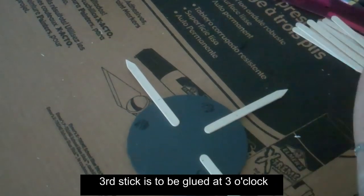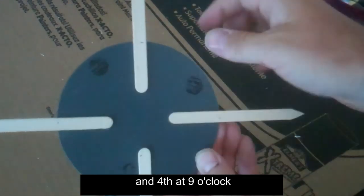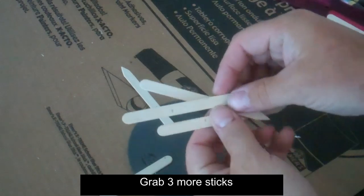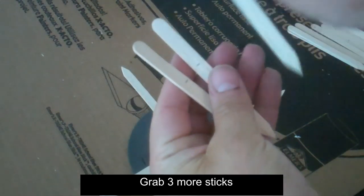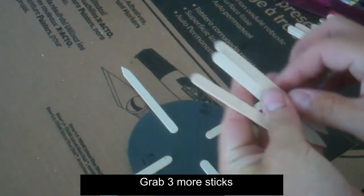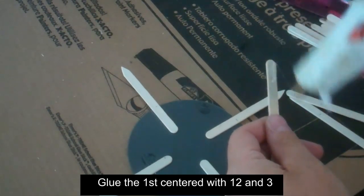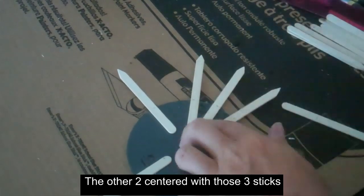Take two more sticks. Glue the first one exactly in the middle of the 12 and 3 o'clock sticks.